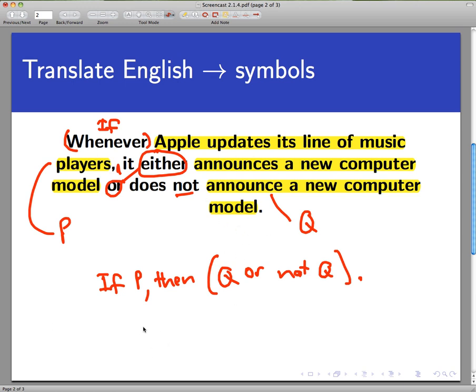So that would be sort of a halfway point between the English statement and logic. And now let's translate this fully into logic symbols. It would say P implies, or if P, then Q or not Q. And that's the statement we are looking at up above, shorthanded out in logical symbols.